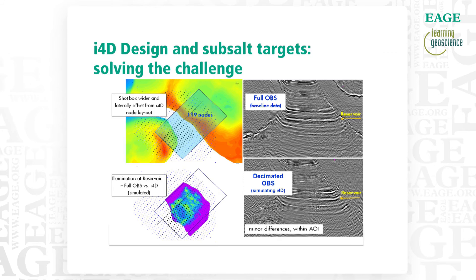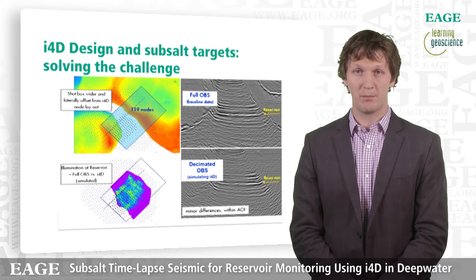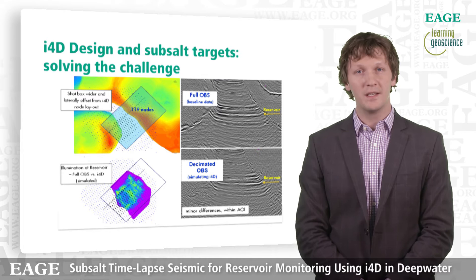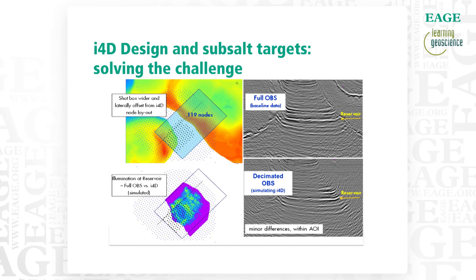With nodal surveys, the processing on the baseline used an RTM migration, which gives a single image for each node. With a thousand nodes, we have a thousand images, and to complete the full stack we just add them all together. Once you identify which nodes to use, you plan the shot box — because when stacking a subset of nodes, you're assuming the original shot box. We did some ray tracing and found we needed to offset the shot box to the northeast because of the salt body. Shots were coming from the top right of those traverse images, going through the salt, reflecting off the reservoirs, and then being collected in the nodes.